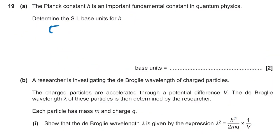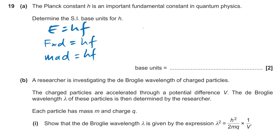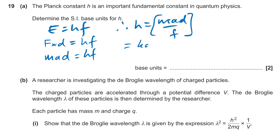Question nineteen: determine the SI base units of Planck's constant. From E = hf, replace joules with force × distance, then Newtons with mass × acceleration: mad = hf, so h = mad/f. Units: kg·m·s⁻² × m ÷ s⁻¹ = kg·m²·s⁻¹.